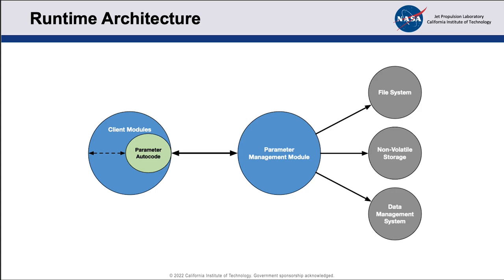The parameter management module defines the single set of generic spacecraft commands to change, save, snapshot, reload, and reset to default all the parameters in the flight software. It coordinates parameter changes — it receives the message from the ground saying 'I want to change parameter X to value Y,' goes through validation steps, and eventually sends a message off to the client to coordinate that change at an opportune moment in the client module's execution. It does all the seeding and restoring of parameter copies to non-volatile storage, creates data products to report on metadata as well as the parameter values themselves, and handles the snapshot and reload capability.